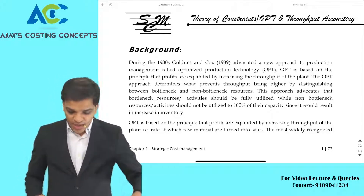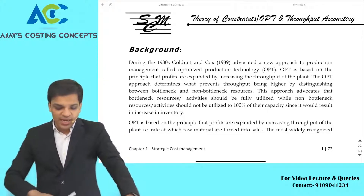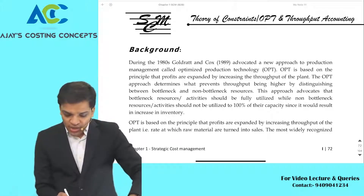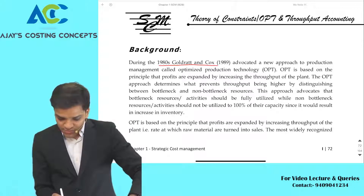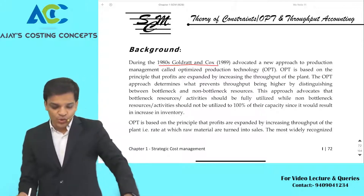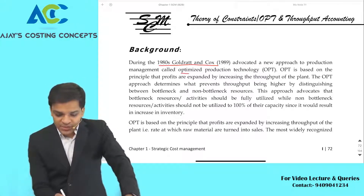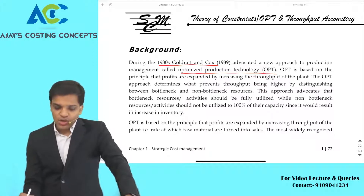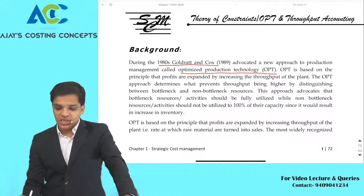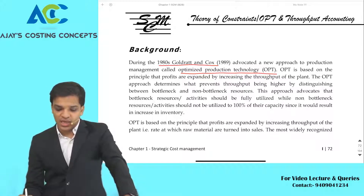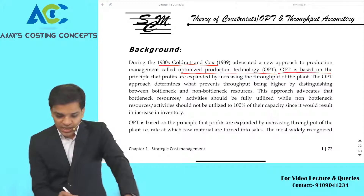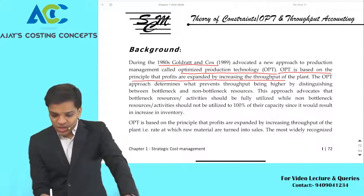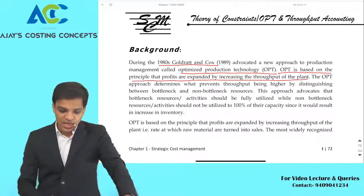Theoretically, in 1980 Goldratt and Cox advocated a new approach called Optimized Production Technology. Optimized Production Technology is based on the principle that profits are expanded by increasing the throughput of the plant.